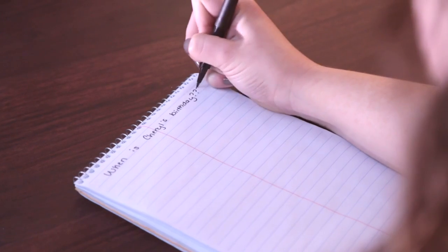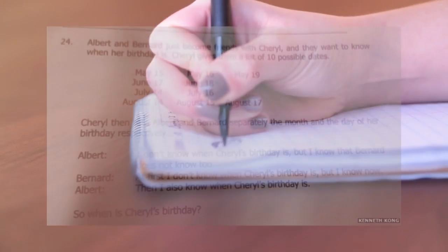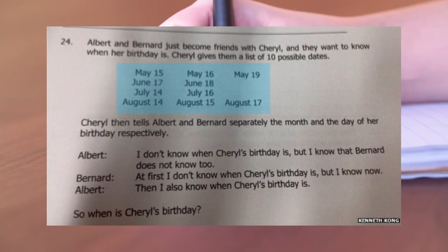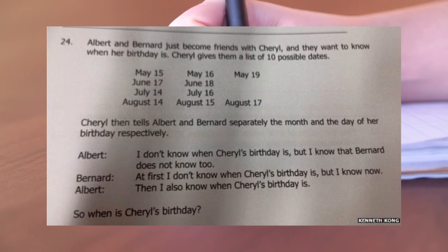Albert and Bernard just became friends with Cheryl and they want to know when her birthday is. Instead of just telling them the answer, Cheryl decides to give them some clues and ten possible dates. Cheryl then tells Albert the month she was born in and Bernard the day she was born in. Neither person heard the other answer.